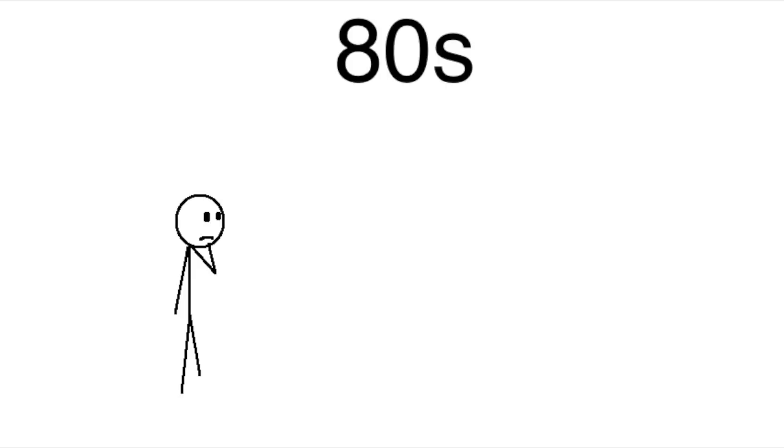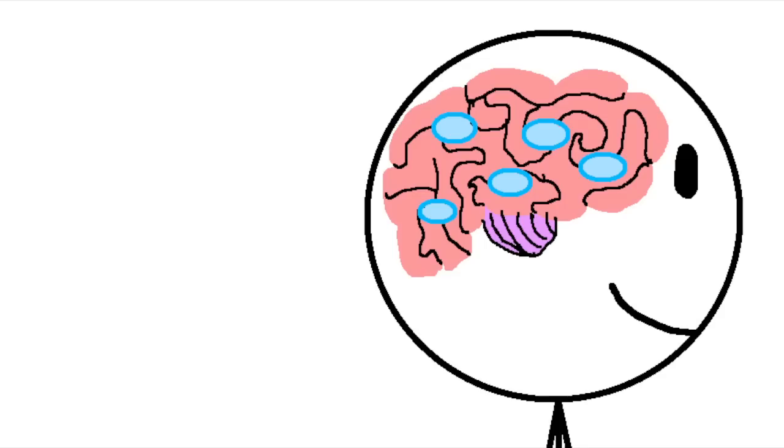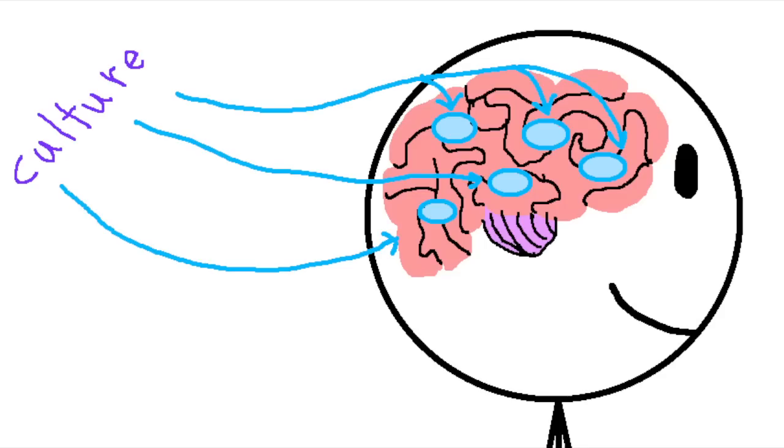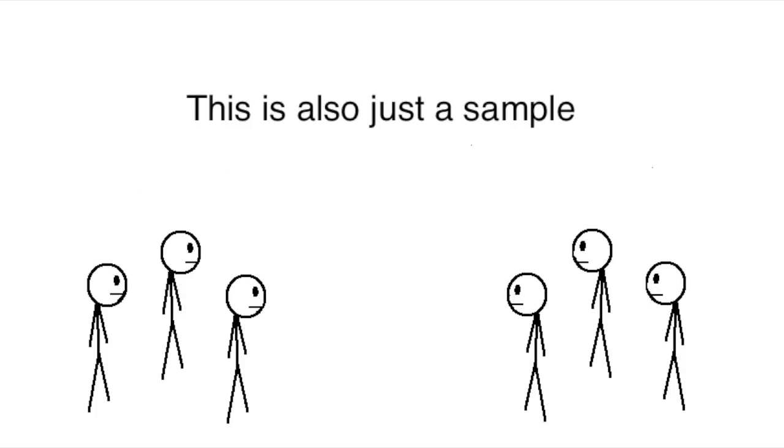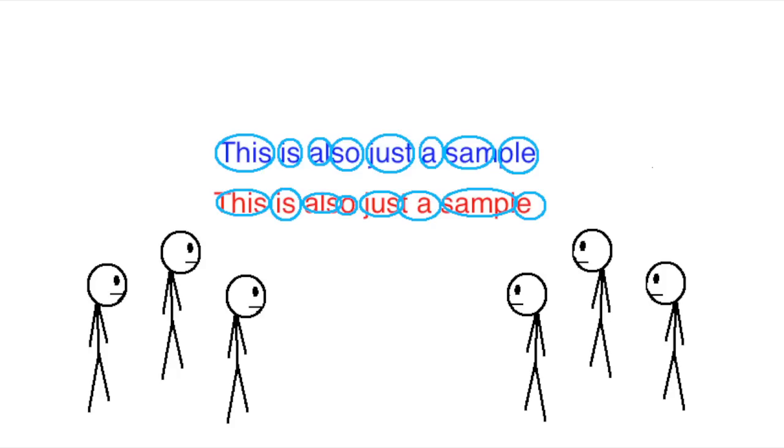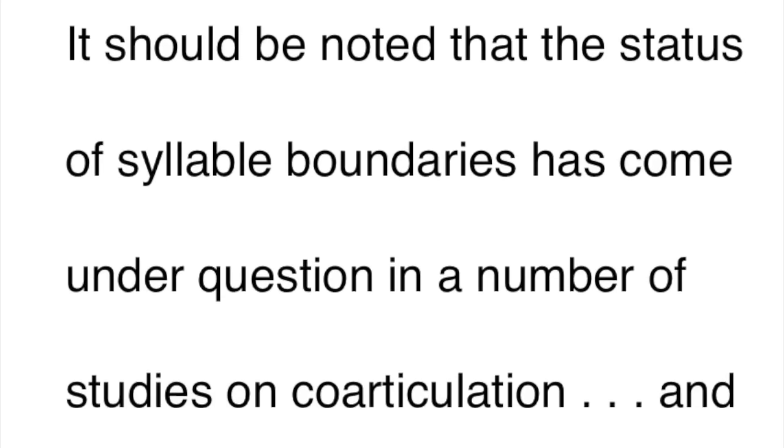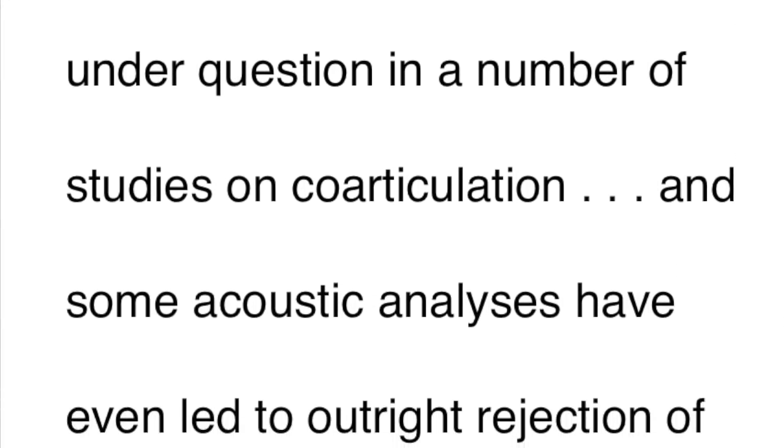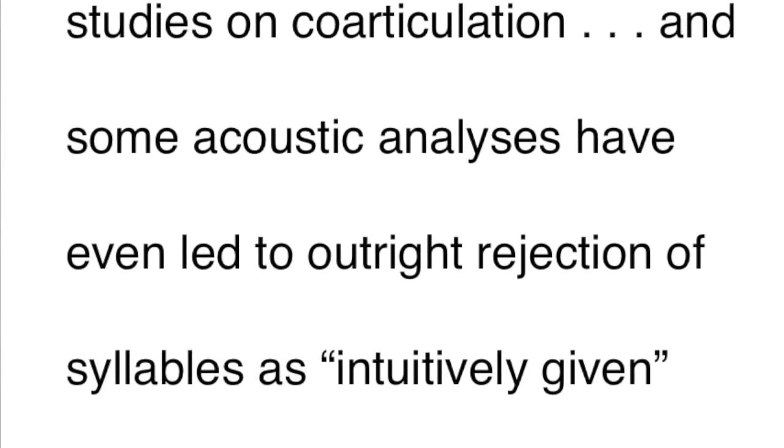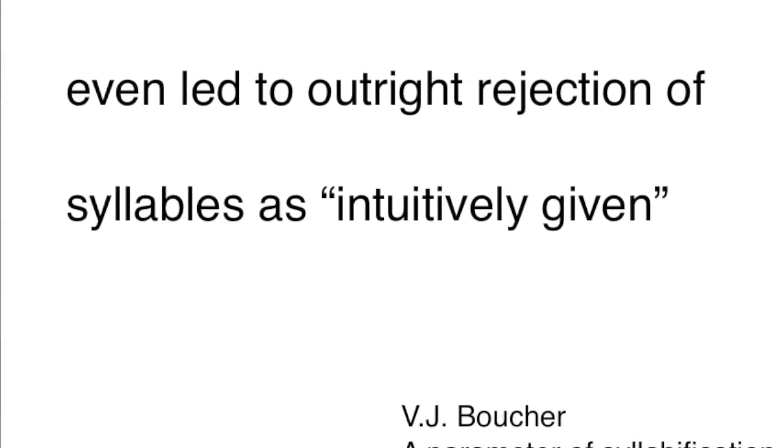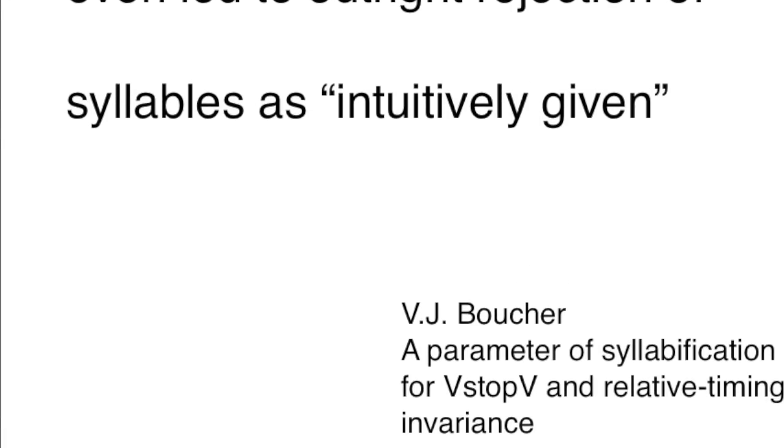By the 80s, some researchers were starting to consider that maybe syllables really don't exist. All that stuff I said earlier about how we have an intuitive grasp of what a syllable is, well, maybe that's just a product of our culture. After all, people who speak different languages will very often look at the same set of sounds and disagree on where the syllable boundaries are. One study from 1988 says, 'It should be noted that the status of syllable boundaries has come under question in a number of studies on co-articulation, and some acoustic analyses have even led to outright rejection of syllables as intuitively given.'